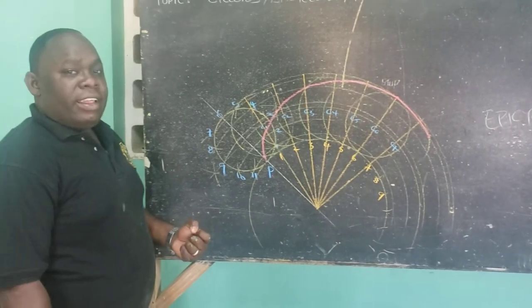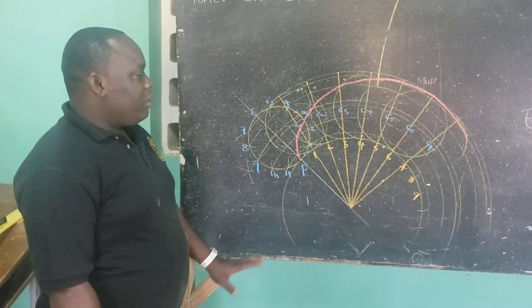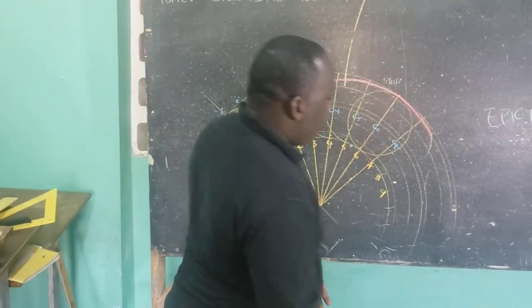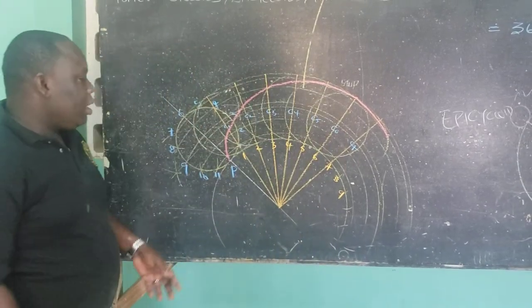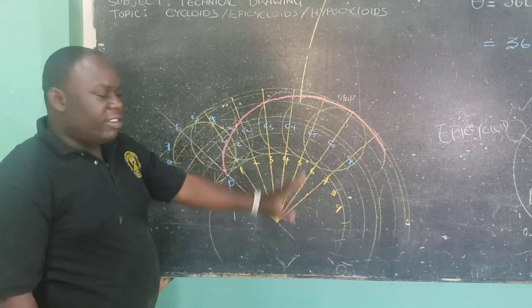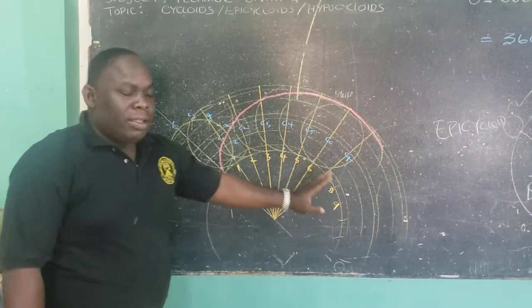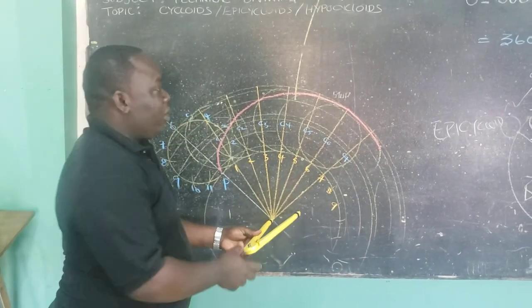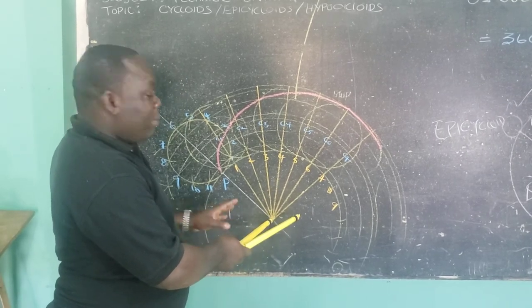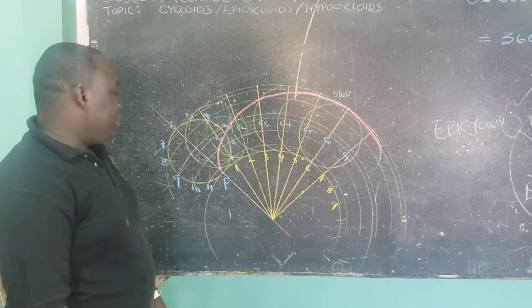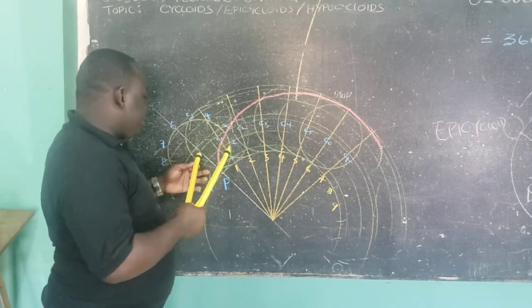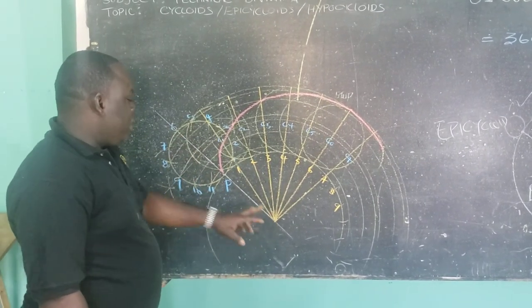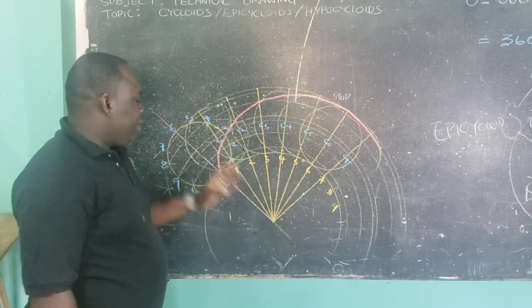That is it for our epicycloid. To recap: the epicycloid rolls on the outside of our circle. We created our base circle — for your purpose the base circle diameter will be 180 millimeters. Then you will have your rolling circle, with a diameter of 60 millimeters. You notice that the centers are joined — the center for your rolling circle and the center for your base circle are connected and lie on the same line at all times.